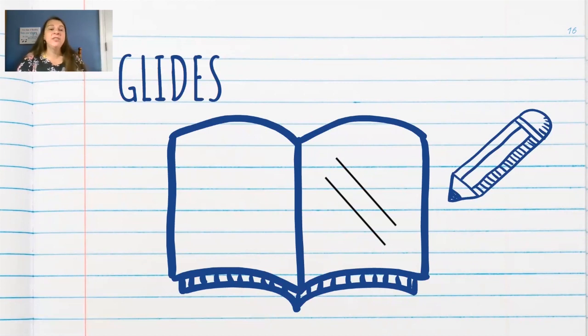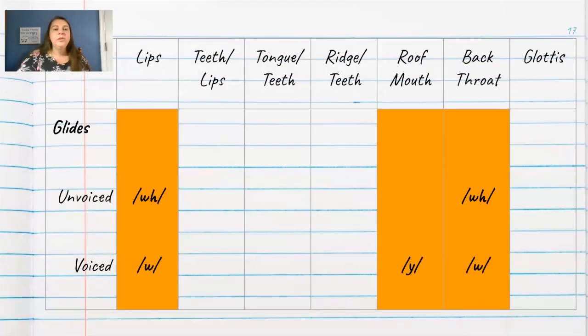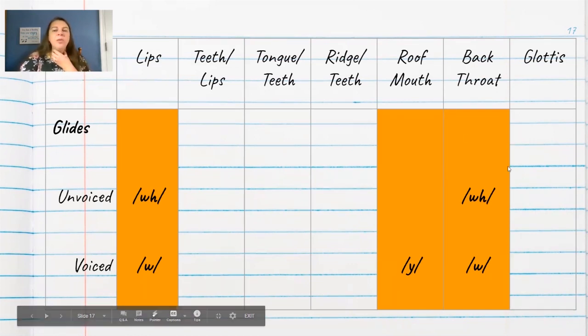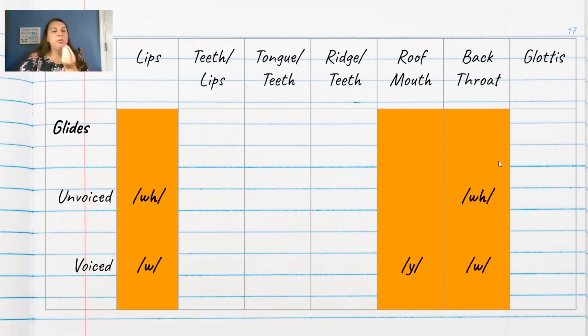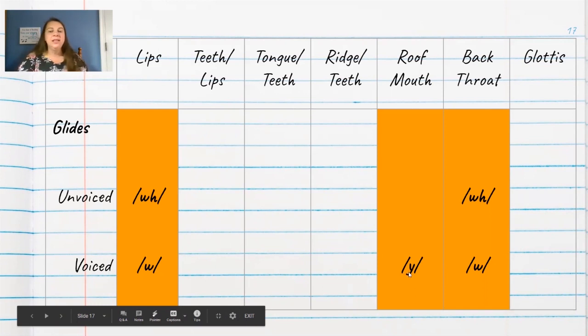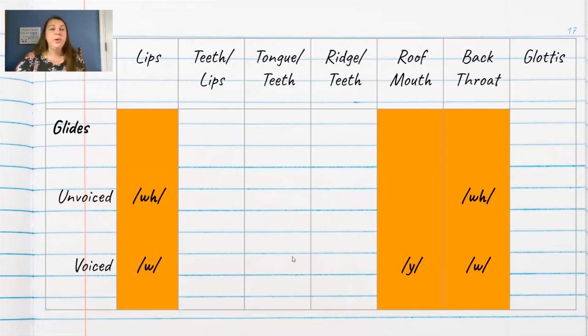Now we're on to the glides. The glides are very airy and it feels like they just glide right out of your mouth. So we have an unvoiced that we don't use very often in American English. It's more common in British English. And then we have the voiced like in wagon and water. You'll notice that these sounds are both in the lips category and the back of the throat category. The sound starts in the back and you're really using your lips to help articulate that sound. And then we have the yh sound like in yellow where you're pushing that sound up through the roof of your mouth sort of and out through yh, yh, yh, yh. That one's hard to get that schwa off of. You got to practice that one quite a bit. That yh sound. So those are your glides.